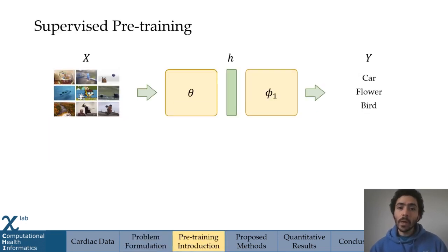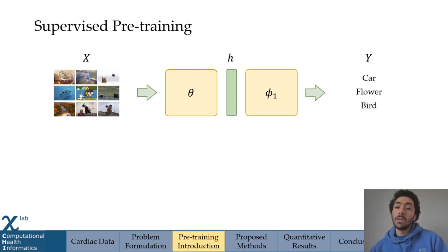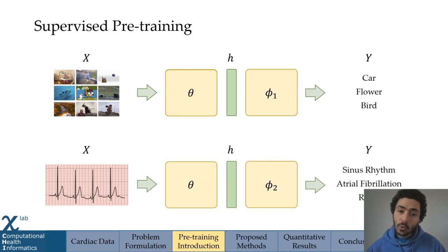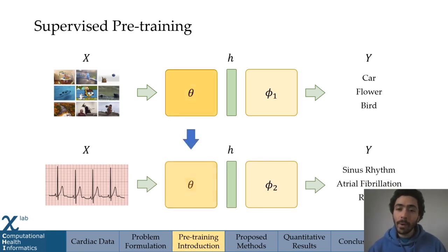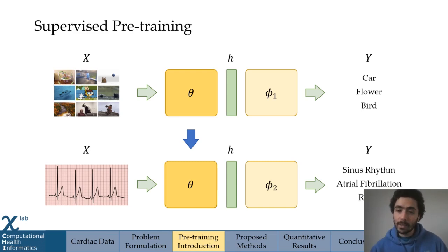The pre-training task of interest here is traditionally supervised pre-training, where you task a network to perform an arbitrary task such as object detection. Given an image, the network predicts what that image contains, and you then transfer that knowledge to your downstream task of interest by transferring the learned parameters. However, this approach assumes you have access to abundant labels in the pre-training task.